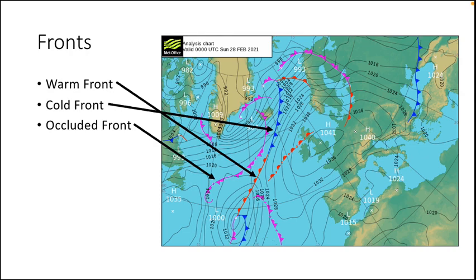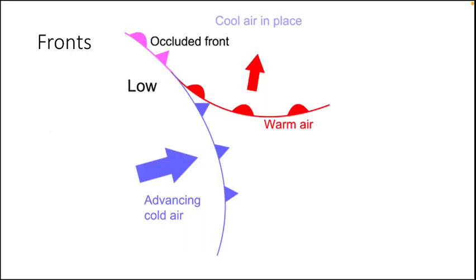Fronts generally form with a low pressure system and show the boundary between warm and cold air. Each front is different, but generally they bring rain — sometimes heavy, sometimes snow — as well as clouds. Warm fronts bring showery and persistent rain; cold fronts bring short but intense rain; and occluded fronts are cloudier and rainier, more like a warm front but can still have embedded convection like a cold front. In a typical low pressure system, the warm front comes first with the cold front behind it, but as the cold front is faster, they merge and that's where the occluded front forms.